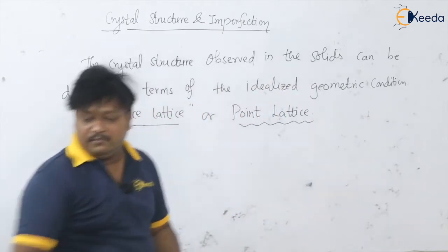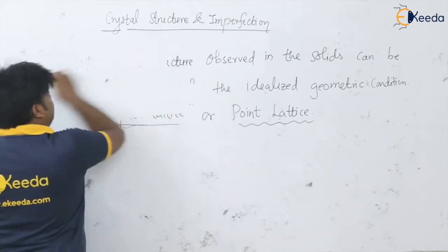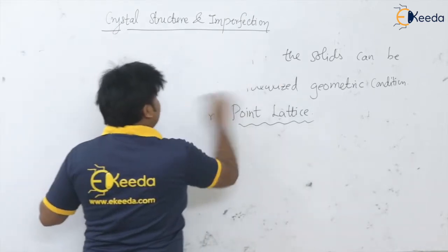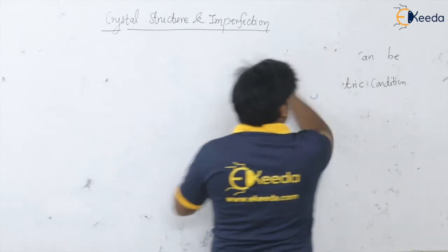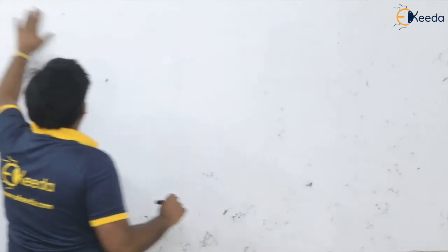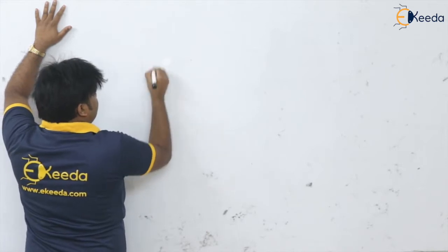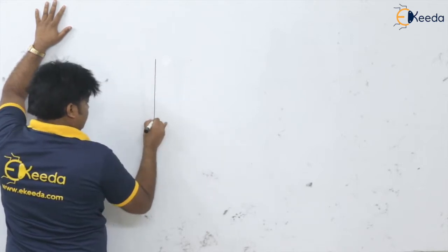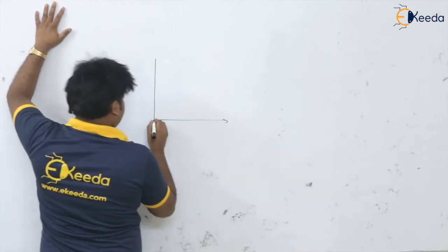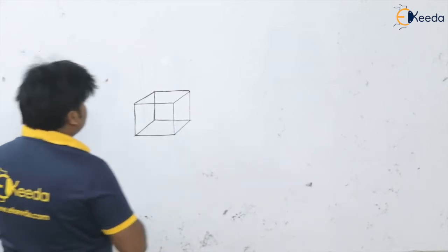Let us see how the space lattice or point lattice looks. We can see the three-dimensional arrangement of atoms. I am going to draw a cube here to illustrate the point lattice or space lattice.